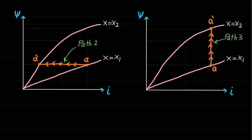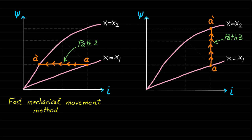The first method, which is based on path 2, is called the fast mechanical movement method. The second method, which is based on path 3, is called the slow mechanical movement method.